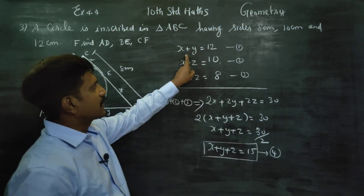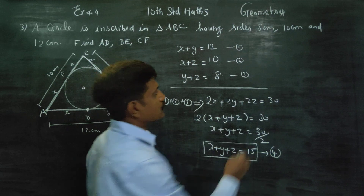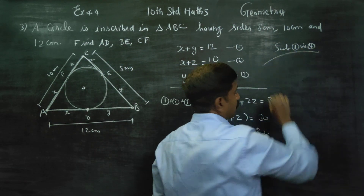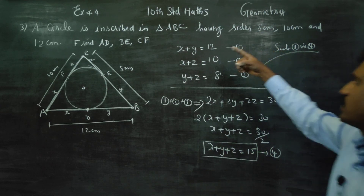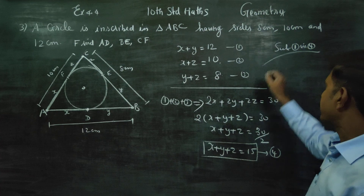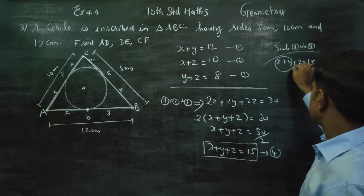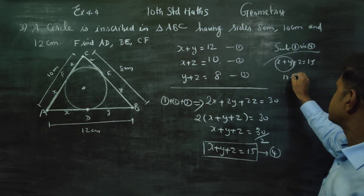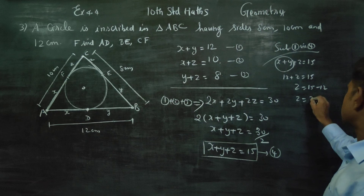Using equation 1, x plus y equals 12. Substituting into equation 4: 12 plus z equals 15, so z equals 15 minus 12, giving z equals 3.